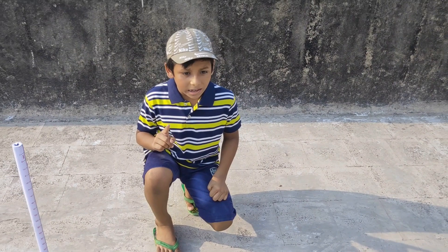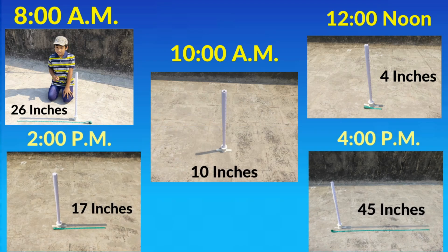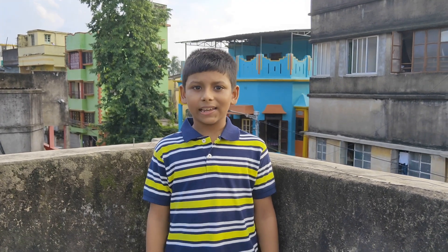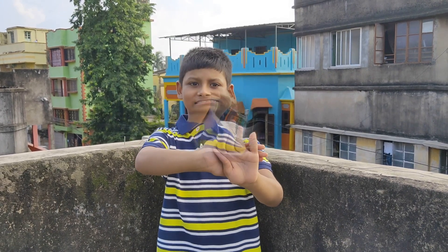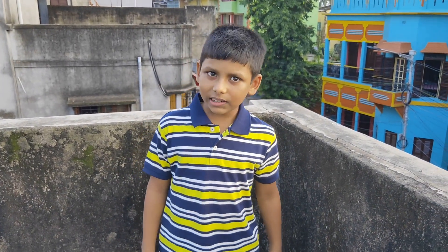The shadow is still growing and the sun is now going to set in the west. A shadow is formed behind an object when it blocks the light. Through our experiment we have proved that the position of the sun decides the length of the shadow. Shadows change during the day and are formed on the opposite side of the light source.